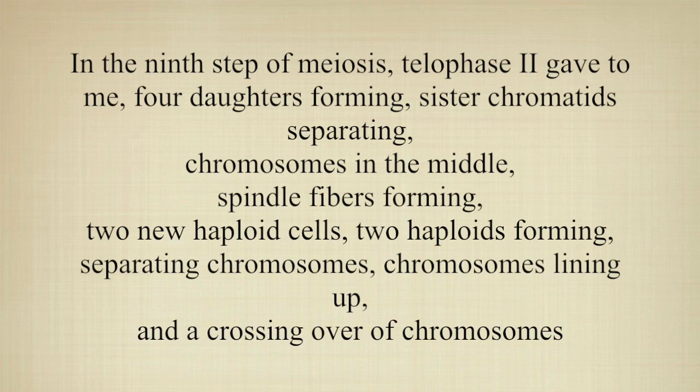In the ninth step of meiosis, where the phase 2 gave to me, four daughters forming, sister chromatids forming, sister chromatids separating, chromosomes in the middle, spindle forming, two new haploid cells. Two haploids forming, separating chromosomes, chromosomes lining up, and a crossing over of chromosomes.